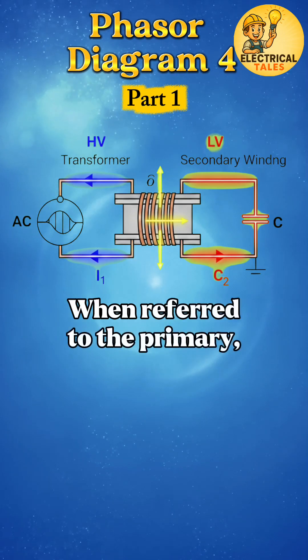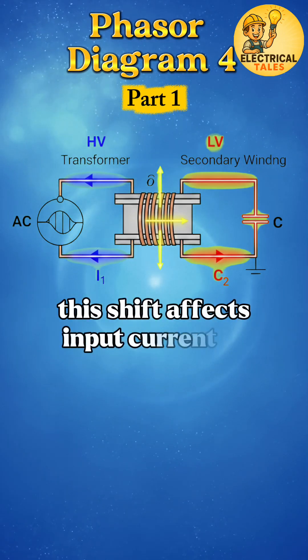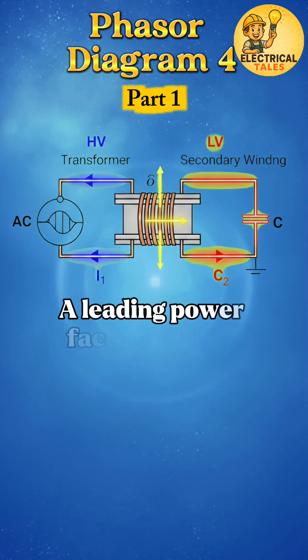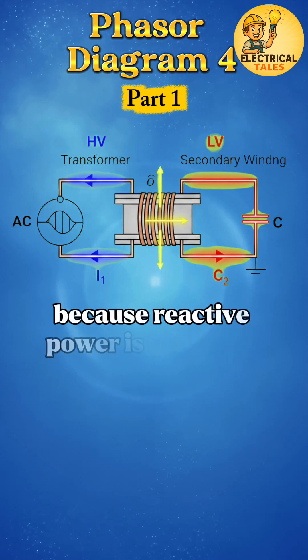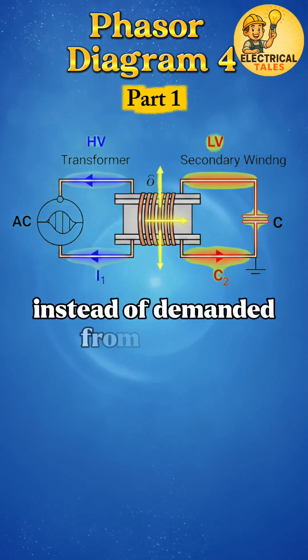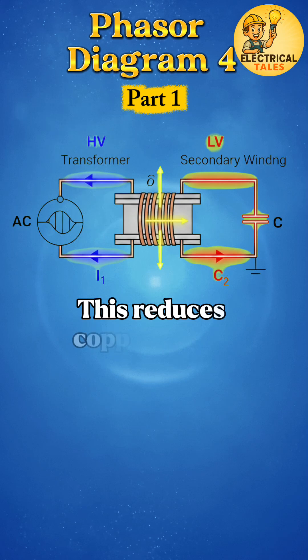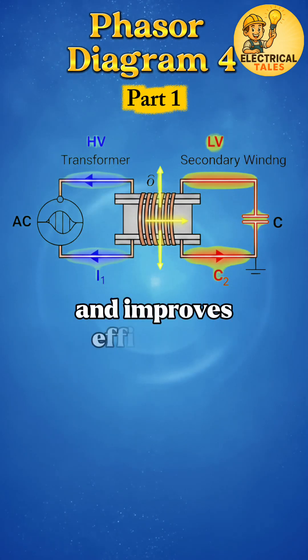When referred to the primary, this shift affects input current I1. A leading power factor is useful because reactive power is delivered by the load instead of demanded from supply. This reduces copper losses and improves efficiency.